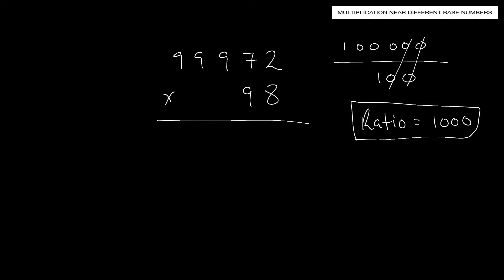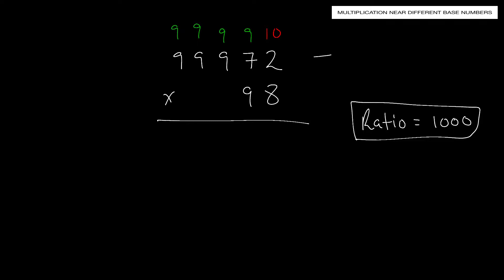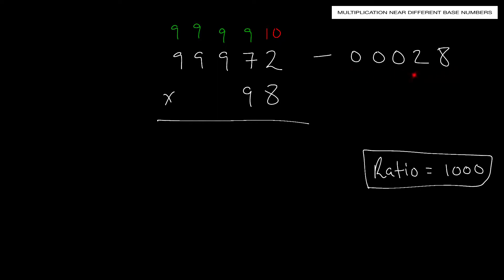Now we find the difference from the base numbers. Using the 'all from 9, last from 10' rule: the difference between 99,972 and 100,000 is 00028 — so the deficiency is 28. And 98 is negative 2 away from 100. Our deficiencies are negative 28 and negative 2.